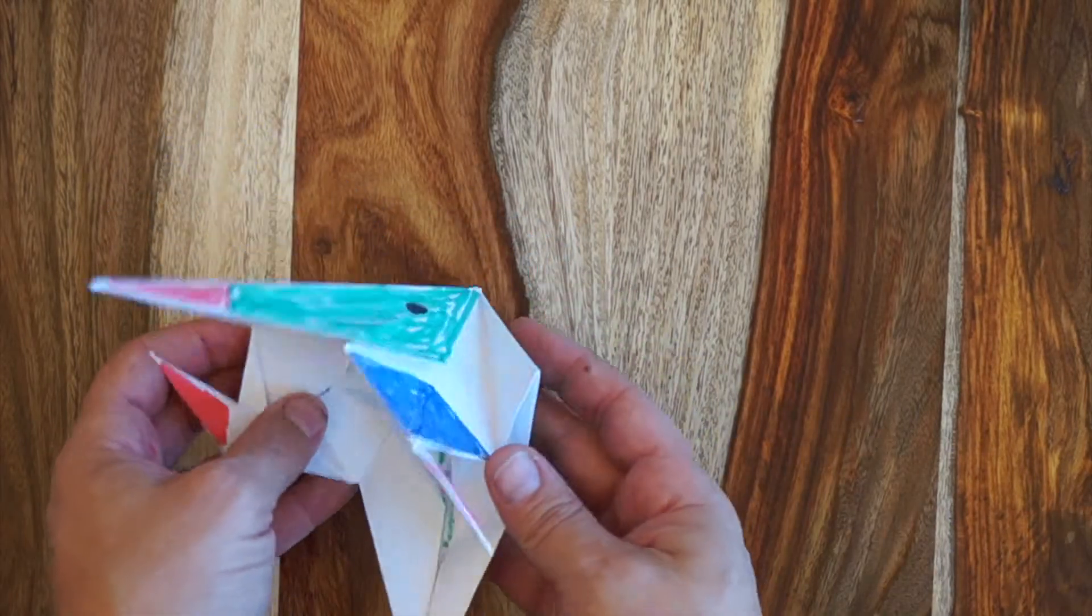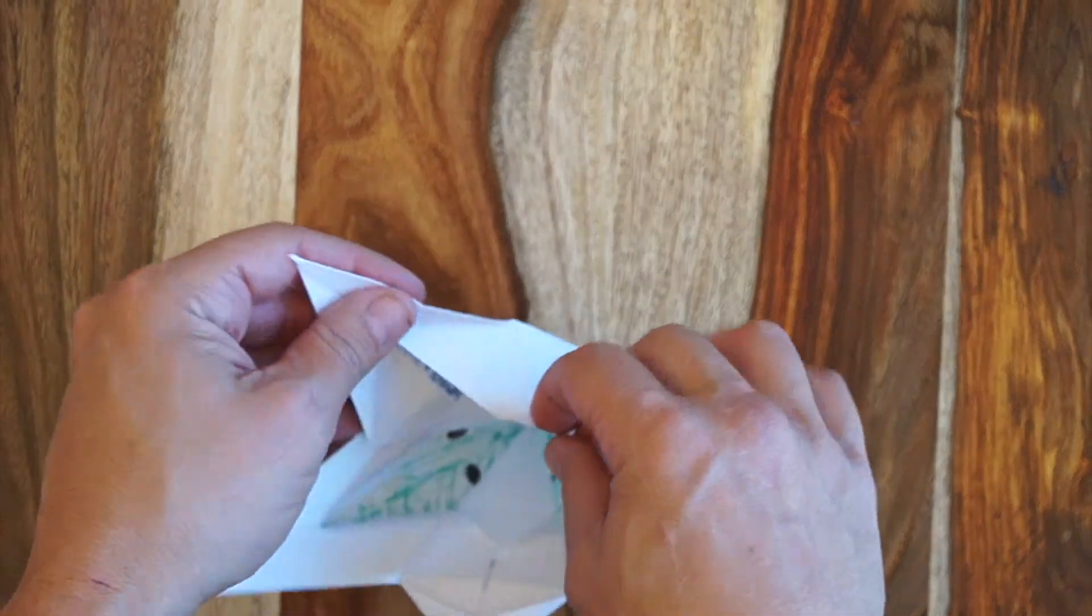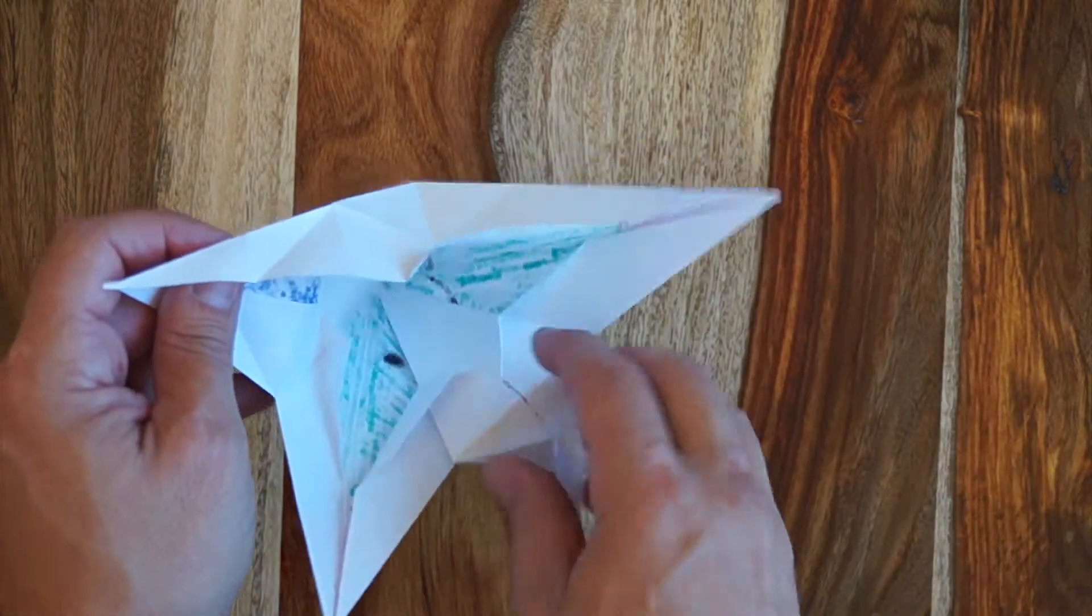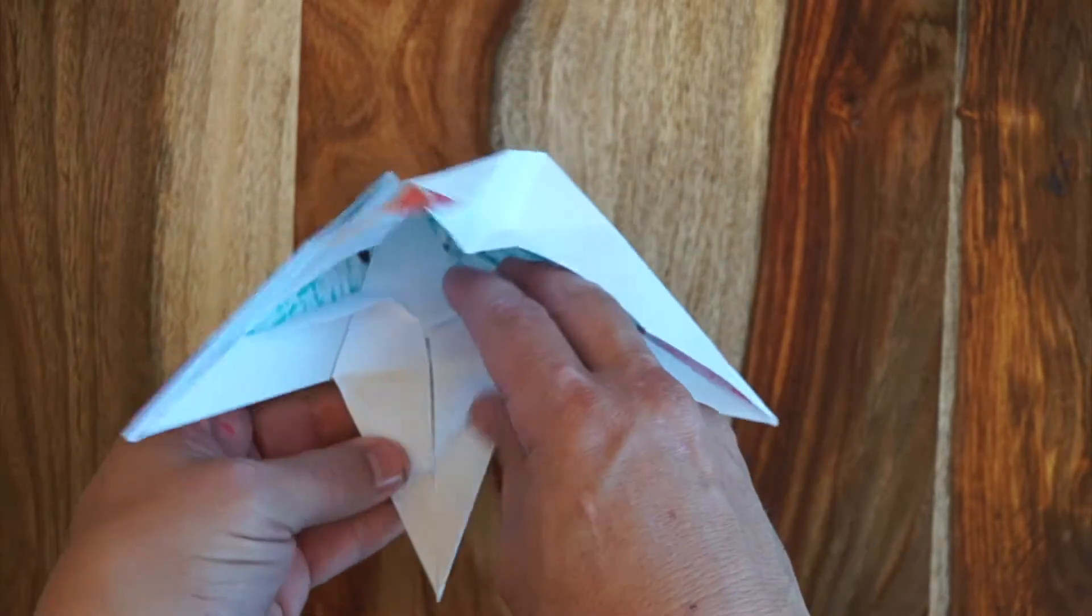You have to be very careful when unfolding origami because sometimes it's very easy to rip the piece of paper, especially if you're using printer paper or copy paper, because it's just not forgiving at all once it's been folded.